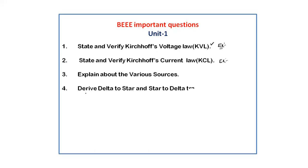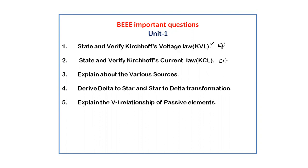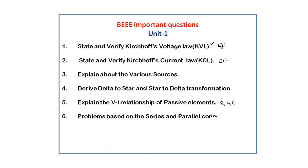Next, derive the star-to-delta and delta-to-star transformation — this is a derivation question. After that, explain the V-I relationship of passive elements: what is the voltage and current relationship of resistor, inductor, and capacitor, which are the passive elements.